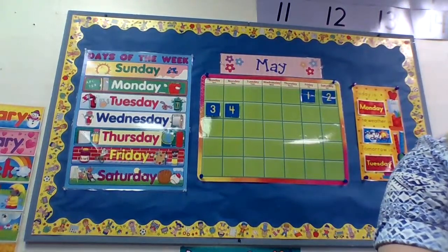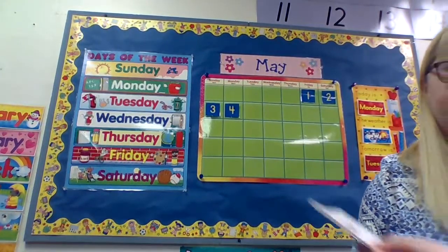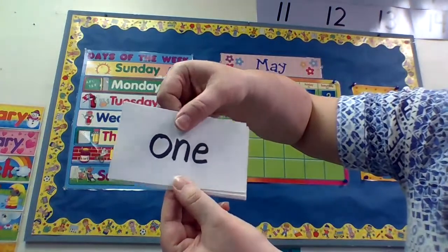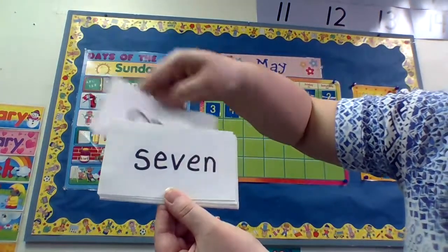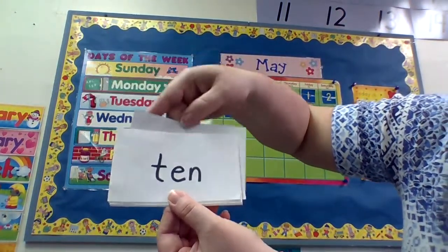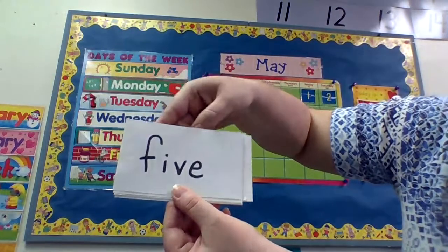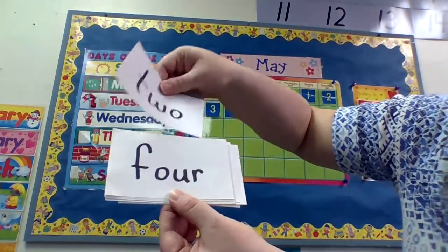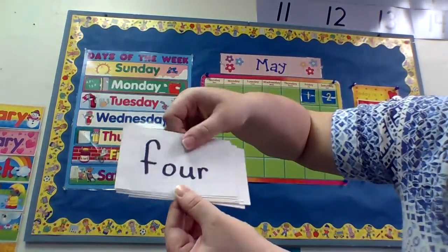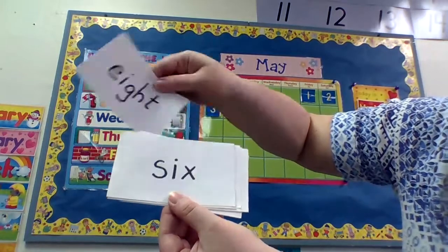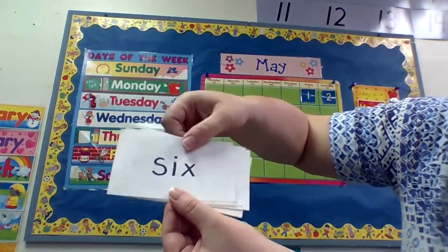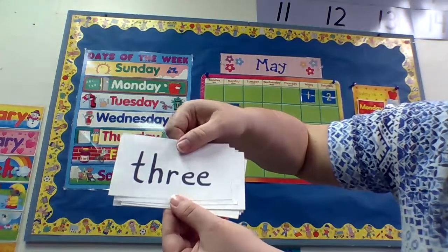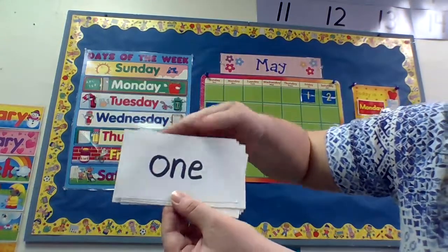Number words. Ready? One, seven, ten, five, two, four, eight, six, nine, three. Back to one.